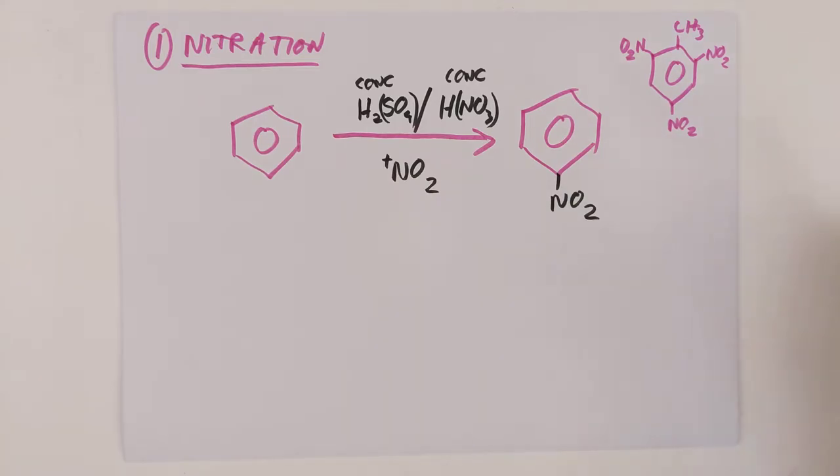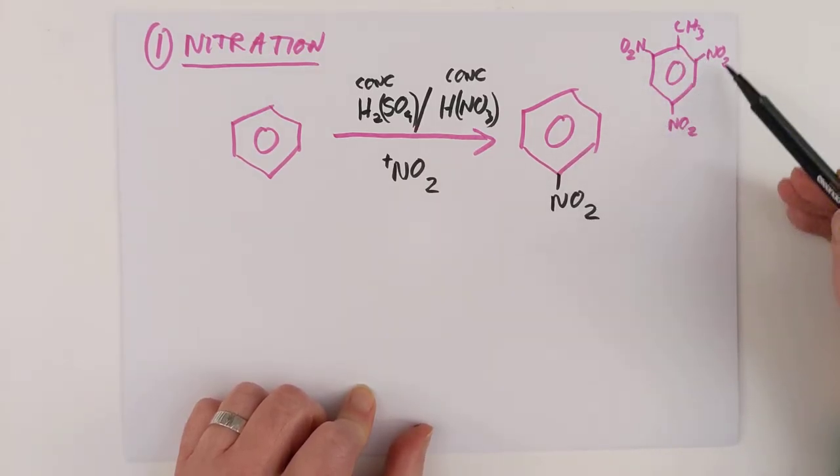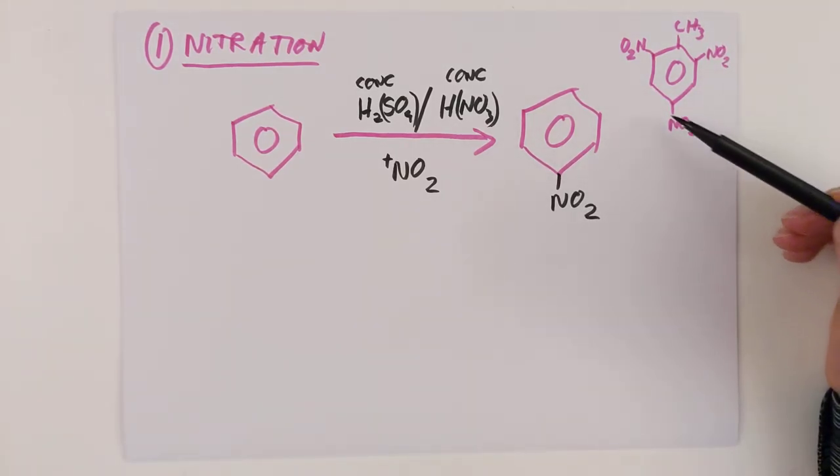Let's do reaction number two. Now, by the way, the reason this is up here is this molecule, before we put the nitros on it, benzene ring, methylbenzene, used to be called toluene in old names. And we put three nitro groups onto it. So this is trinitrotoluene. Otherwise known as TNT. Let's do reaction two.